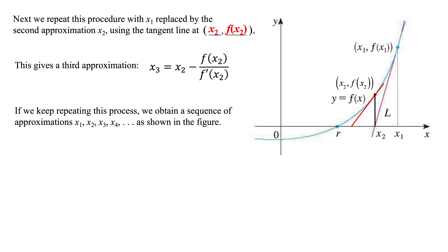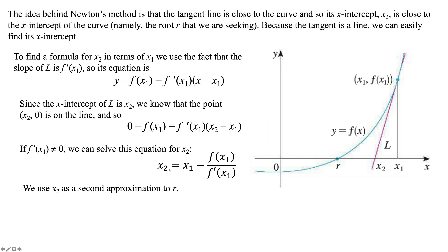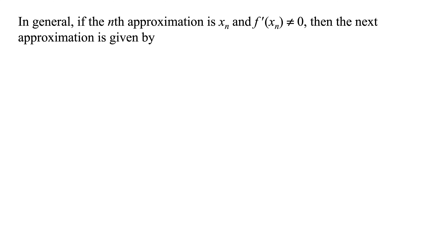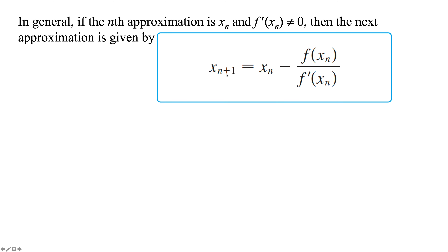If we wrote this out in point-slope form and solved for x sub 3, we get the same formula — just changing the indices. We repeat the process, drawing tangent lines, to get x sub 4, getting as close to the value r as possible. In general, if the nth approximation is x sub n and f'(x sub n) is never zero, the next approximation is: x sub (n+1) equals x sub n minus f(x sub n) over f'(x sub n).